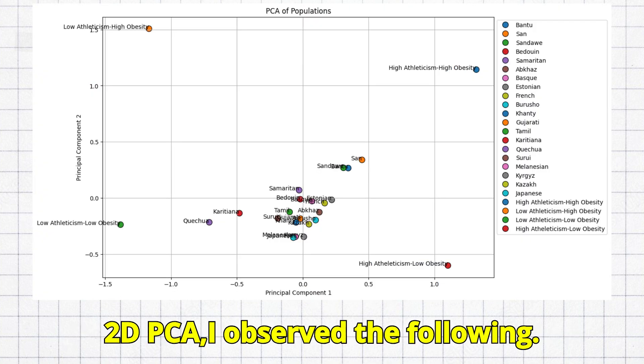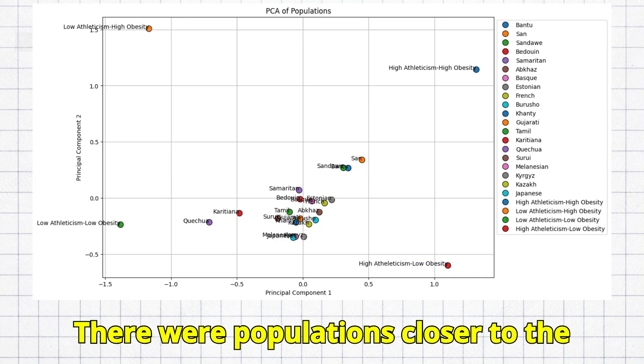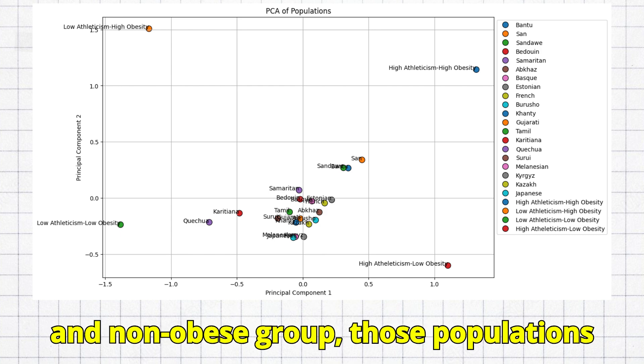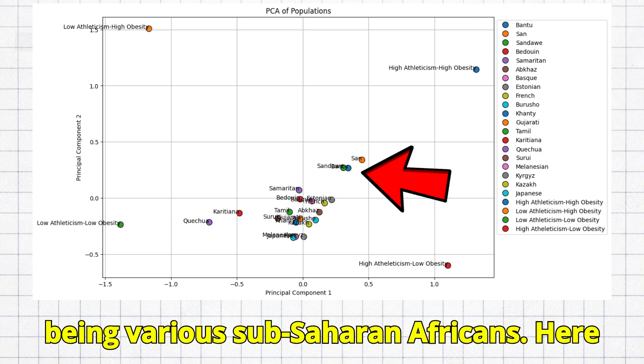After projecting that on a 2D PCA, I observed the following. There were populations closer to the athletic and obese group than unathletic and non-obese group, those populations being various sub-Saharan Africans.